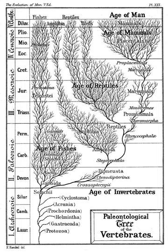In his 1976 book The Selfish Gene, he explains: "Individuals are not stable things, they are fleeting. Chromosomes, too, are shuffled to oblivion, like hands of cards soon after they are dealt, but the cards themselves survive the shuffling. The cards are the genes. The genes are not destroyed by crossing over. They merely change partners and march on. Of course they march on. That is their business. They are the replicators, and we are their survival machines. When we have served our purpose, we are cast aside. But genes are denizens of geological time. Genes are forever."